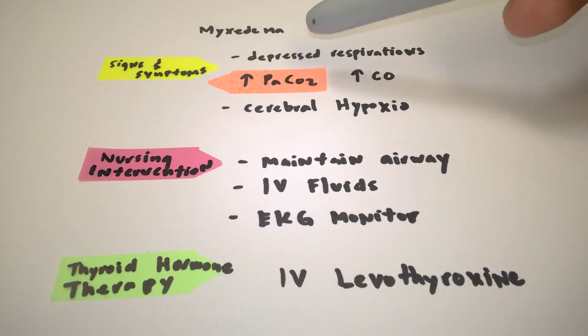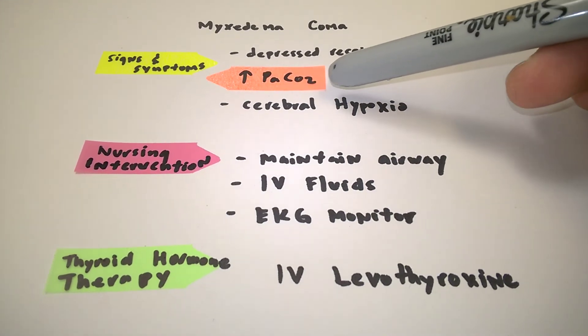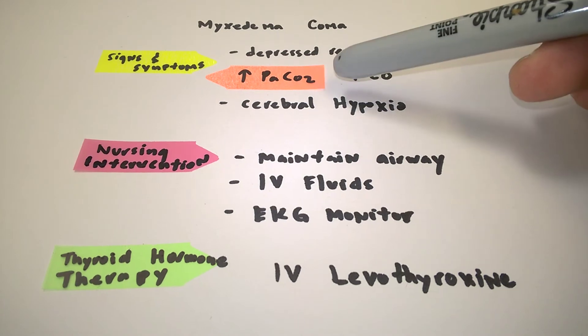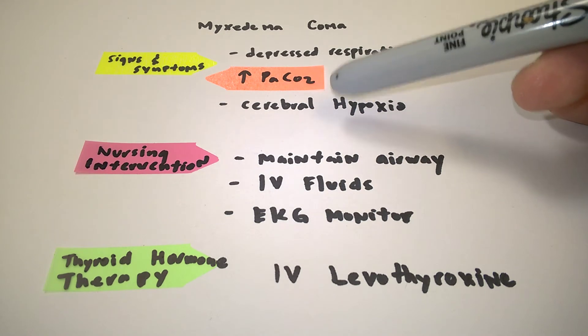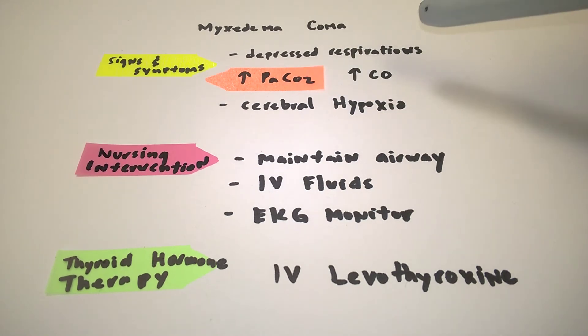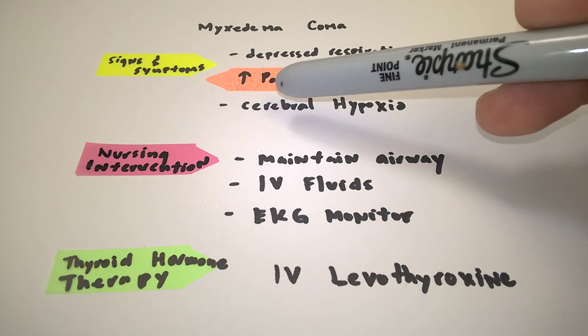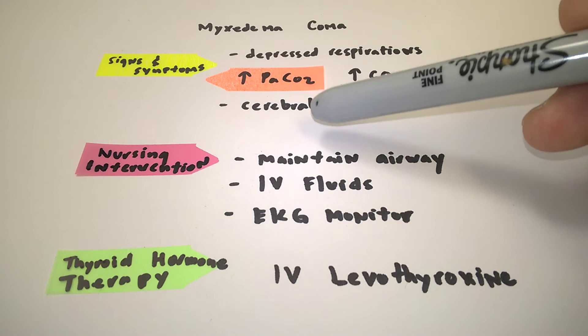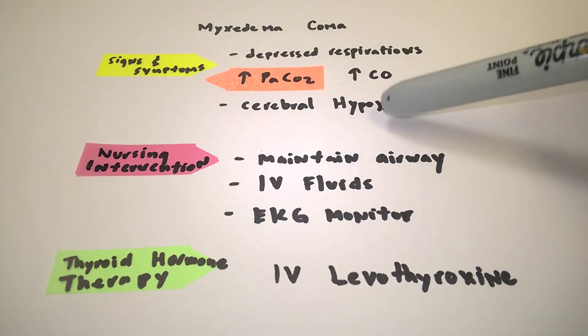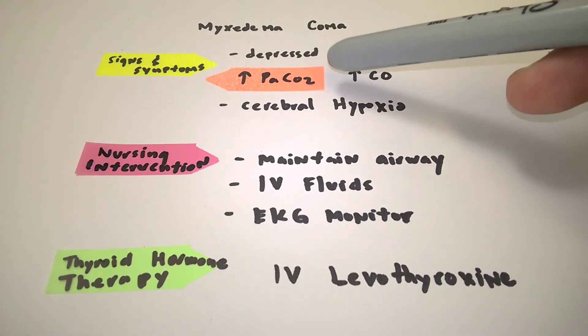What are the signs and symptoms in our patient? Usually what we see is depressed respirations, significantly depressed respirations. Therefore, our PaCO2, or the partial pressure of carbon dioxide in the arterial blood, would actually be increased to compensate for the decrease in respiration. The normal PaCO2 is between 35 and 45 millimeters of mercury. You need to know your values.